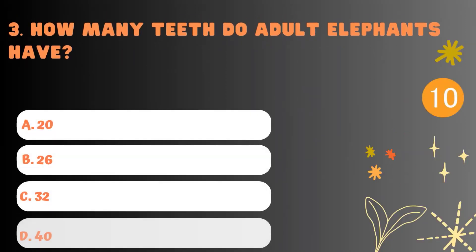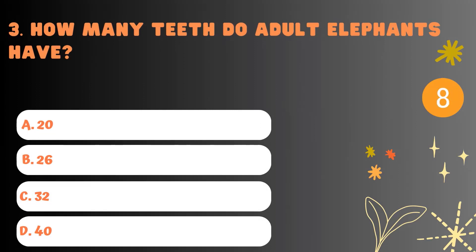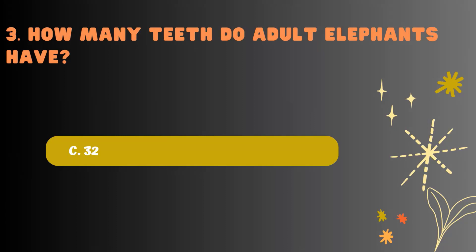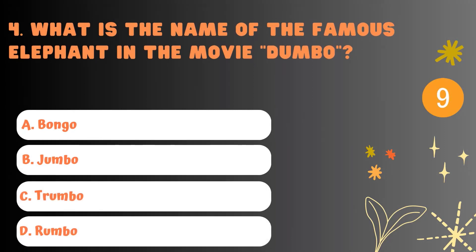3. How many teeth do adult elephants have? 4. What is the name of the famous elephant in the movie Dumbo?